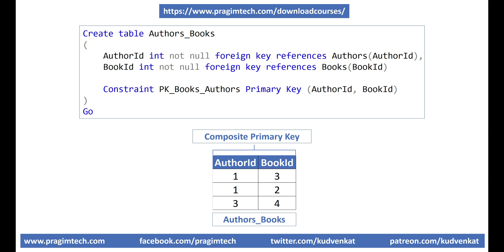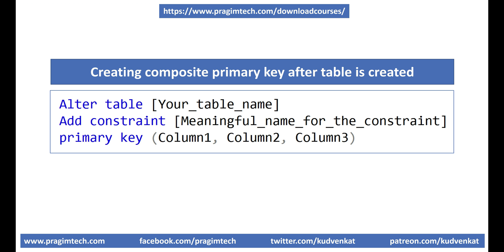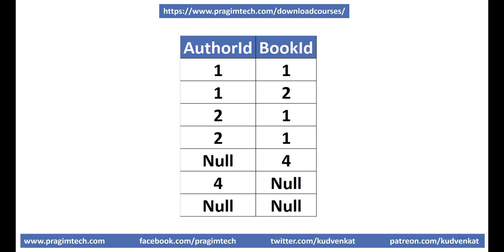In this example, we are creating the composite primary key along with the table while it is being created. But what if we already have a table and want to create a composite primary key on that existing table? Well, the following is the code for that. I'll have all these SQL scripts available on my blog and include the link in the description of this video. A composite primary key is just like a primary key on a single column — all the rules still apply.